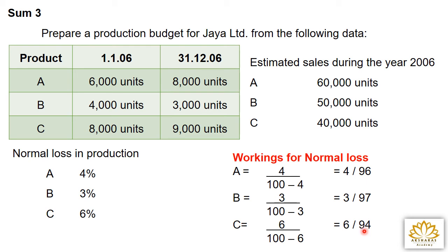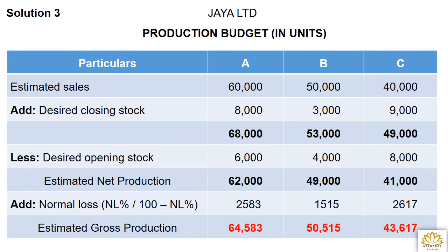Solution — heading: JR Limited, Production Budget in units. 4 columns: Particulars, A, B, C. Format: estimated sales plus desired closing stock, then less desired opening stock. Estimated sales: A = 60,000; B = 50,000; C = 40,000. Desired closing stock: A = 8,000; B = 3,000; C = 9,000. Totals: A = 60,000 + 8,000 = 68,000; B = 50,000 + 3,000 = 53,000; C = 40,000 + 9,000 = 49,000.